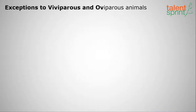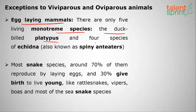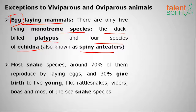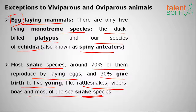Exceptions to the viviparous/oviparous rule include egg-laying mammals. Generally mammals give birth to live young, but there are only five living monotreme species: the duck-billed platypus and four species of echidna, which lay eggs. Also, around 70% of snake species lay eggs, but 30% — like rattlesnakes, vipers, and boas — give birth to live young.